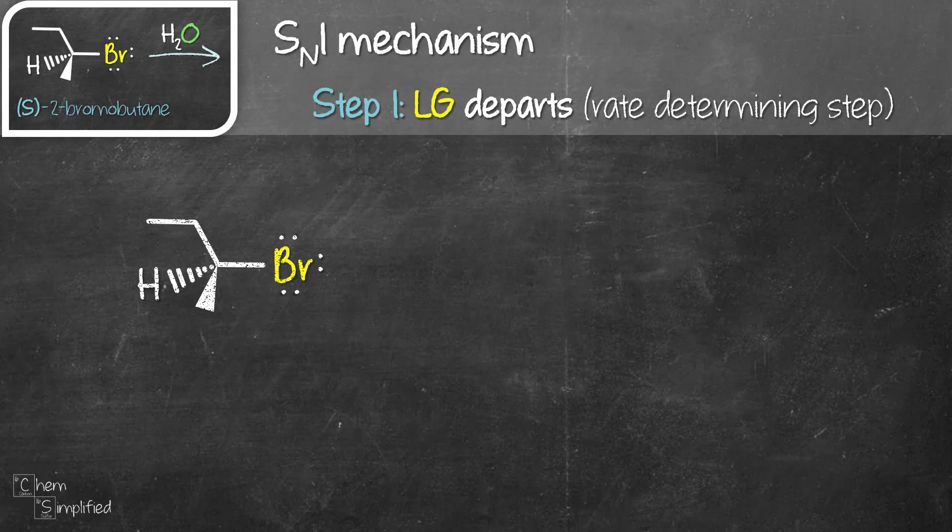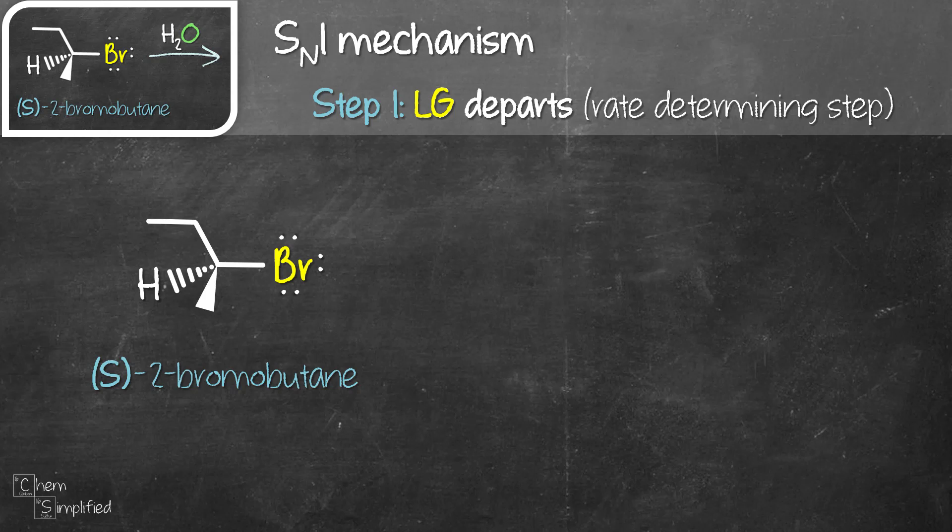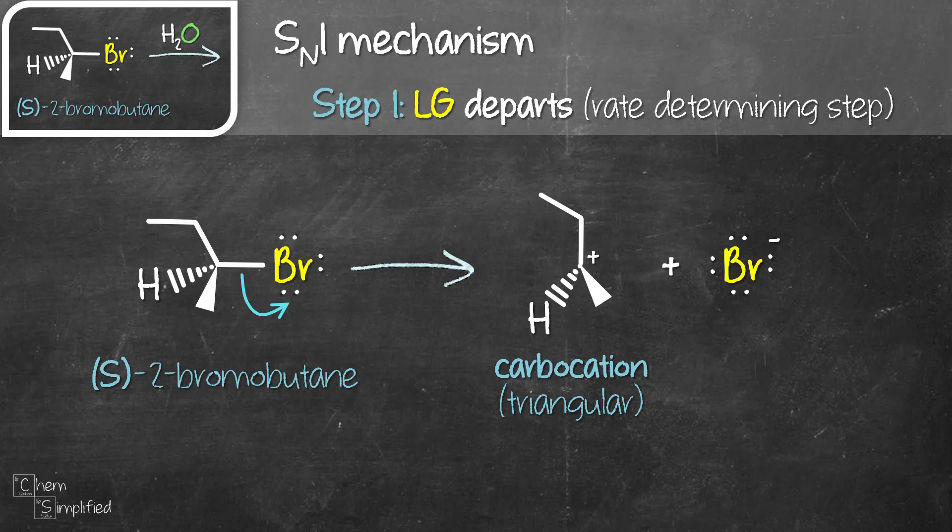Let's use S-2-bromobutane as our substrate. The first step in an SN1 reaction is the departure of the leaving group. In our example, bromine is the leaving group. It's going to leave to form a carbocation and a bromide ion. Since the carbocation is triangular, when the nucleophile attacks, there are two sides it can attack from.